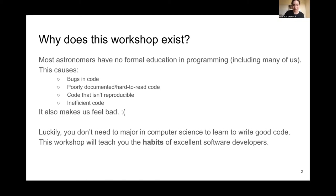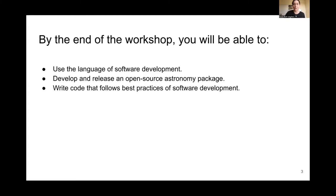You don't need to major in computer science to learn to write good code. You don't need formal education aside from this workshop. This workshop is going to teach you the habits of excellent software developers, or at least we hope it will. By the end of the workshop you'll be able to use the language of software development, develop and release an open source astronomy package from start to finish, and write code that follows best practices of software development.